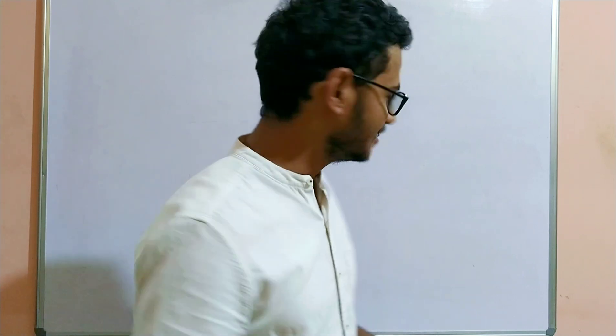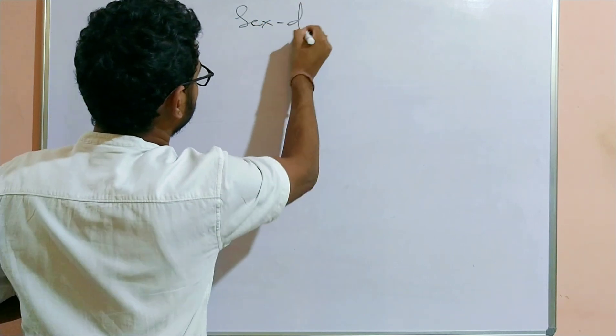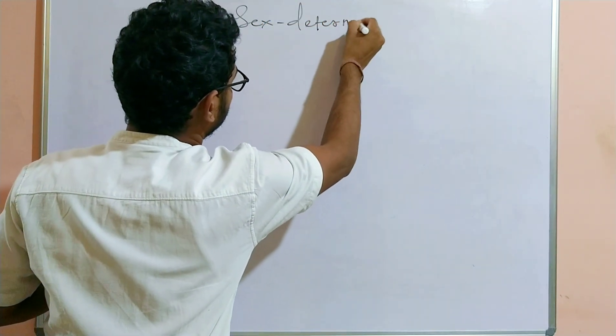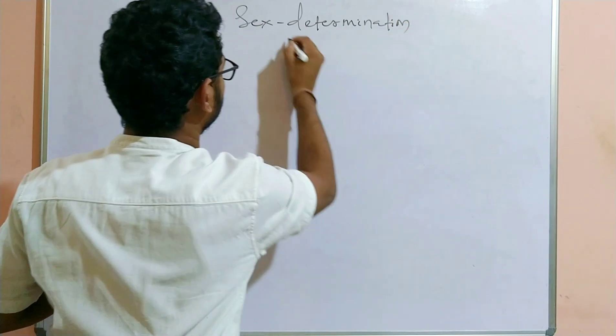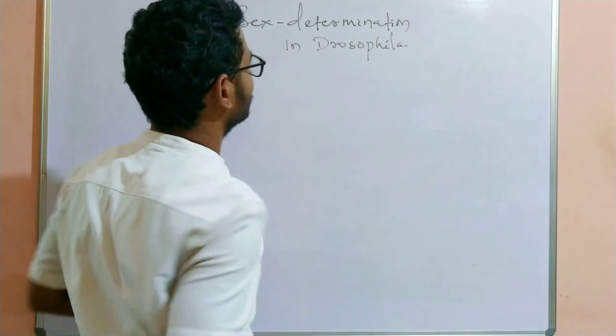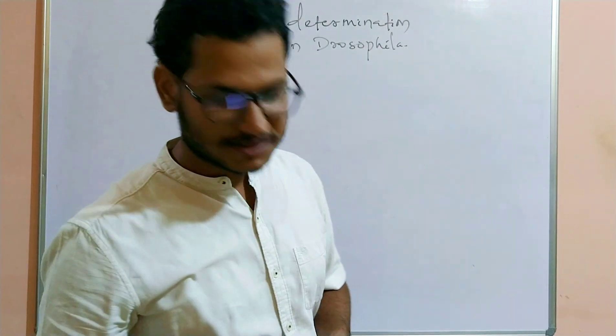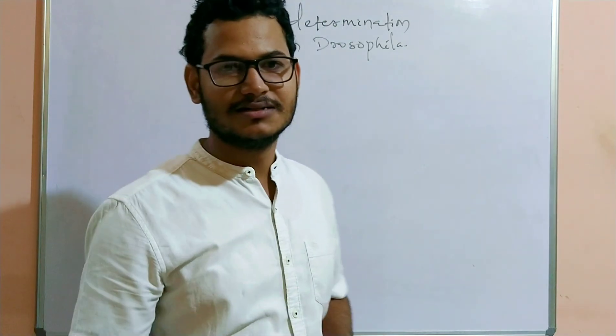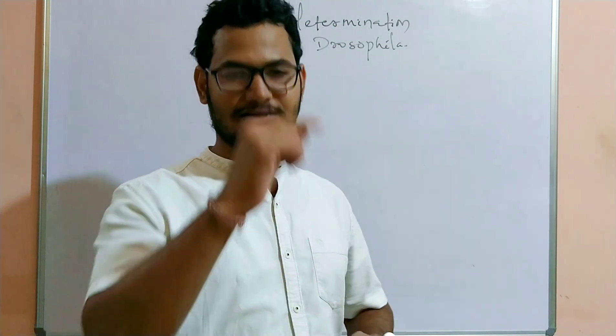Hello friends, welcome to my channel Sims Biology. Today in this video lecture we are going to understand sex determination in Drosophila or fruit flies — how the genic balance theory helps in determining the sex in case of Drosophila. We will study this with the help of genic balance theory, but first we need to understand who discovered the role of the ratio of sex chromosomes and autosomes in the determination of sex.